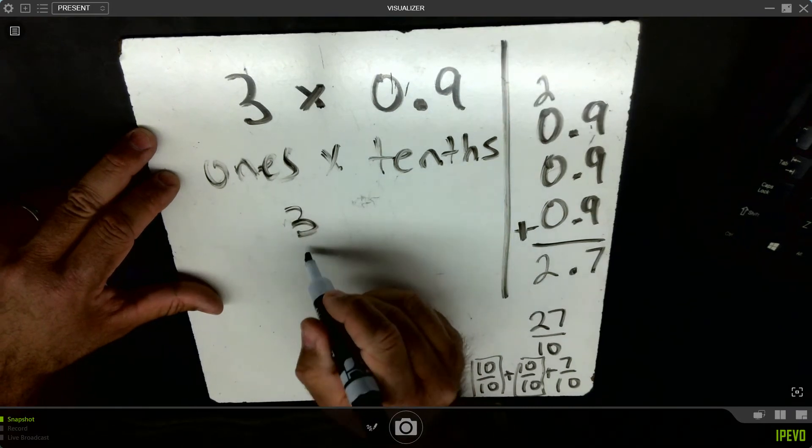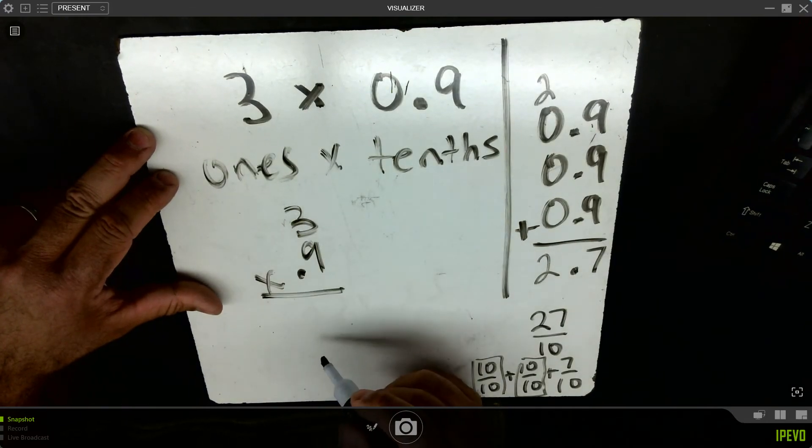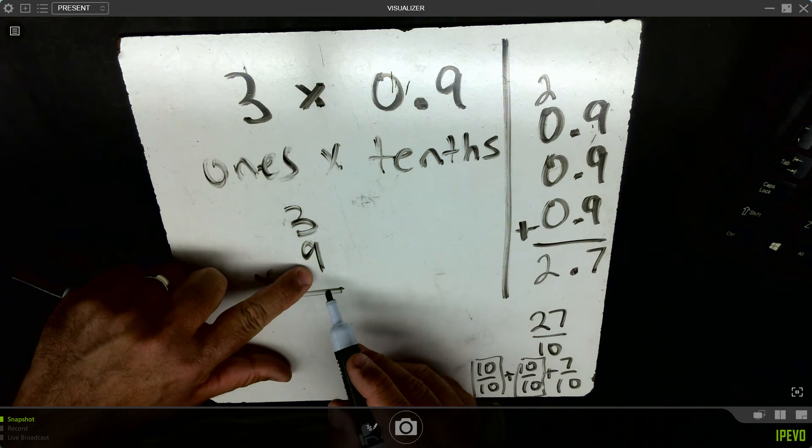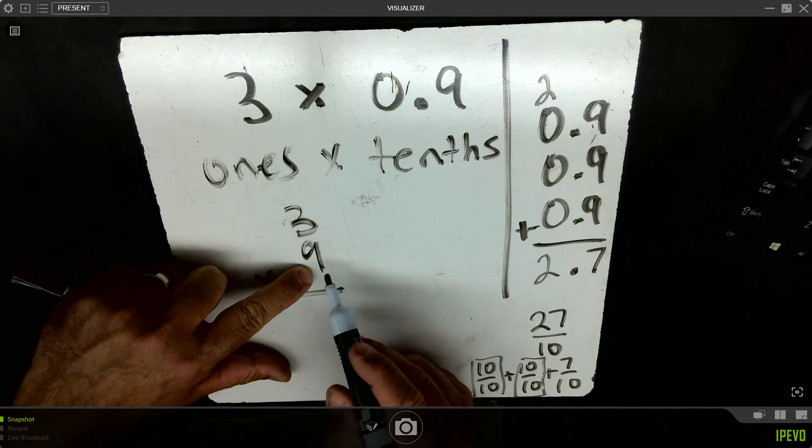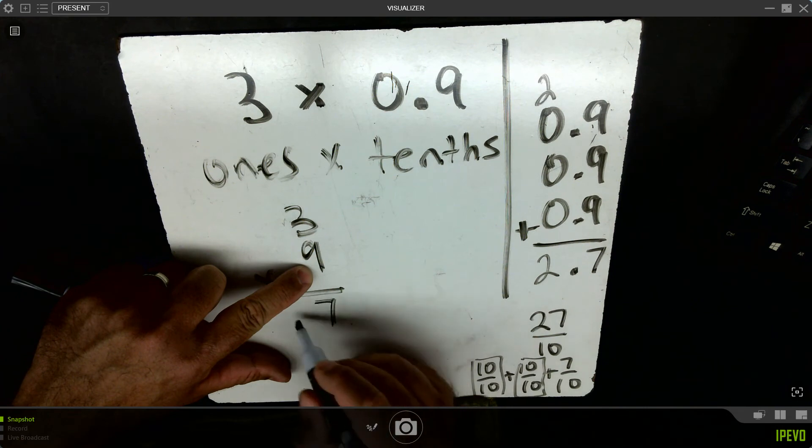I'm going to set it up vertically as 3 times 9 tenths. I'll treat this 9 tenths right now like a whole number and just do the regular multiplication of 9 times 3. That's 9 groups of 3 or 3 groups of 9. However you look at it, that would be 27.